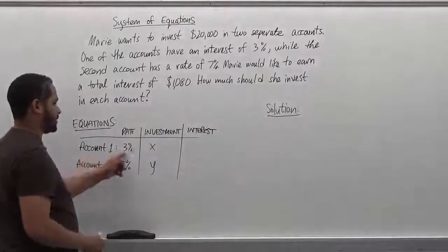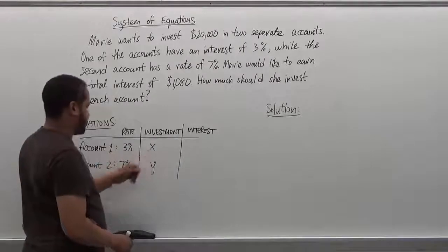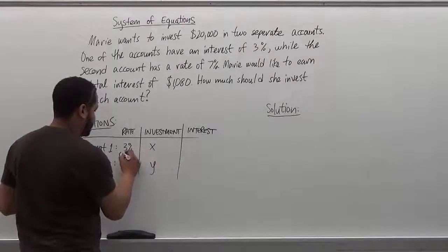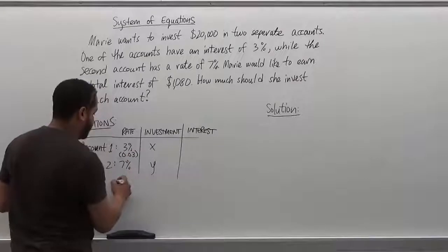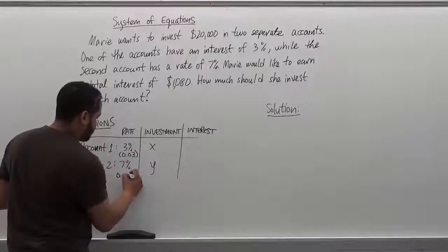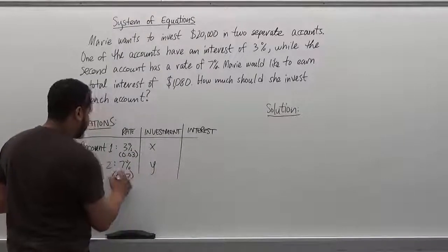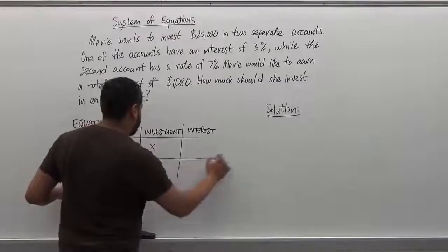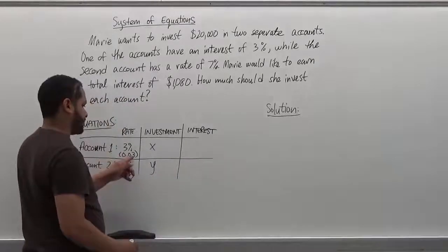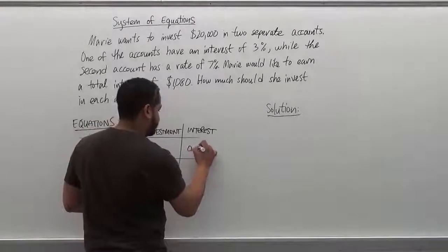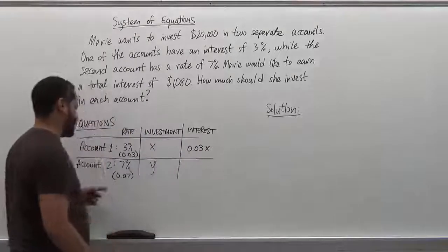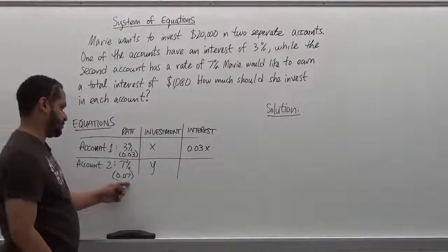And the interest of the first account is 3% times x. And let's just keep in mind that the percent of interest here is 0.03. The percent of interest here is 0.07. So in account 1 the interest is going to be 0.03 times x. The interest in account 2 is going to be 0.07y.